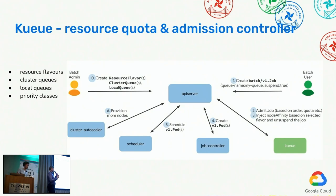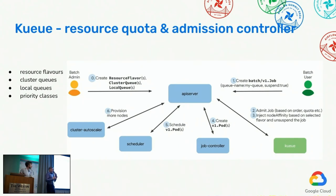Whenever you want to submit a job with specific hardware constraints or requirements, you submit it to Kueue. Kueue is responsible for checking if there are enough resources to execute your Kubernetes job. If there are enough resources, it will admit or allow the job execution, update the information about current resource usage, and ensure you are not exceeding the quota assigned to your cluster. On the other hand, if this is a high-priority workload and there are not enough resources, Kueue will interrupt some other workload with lower priority just to make space. That, in a nutshell, is what Kueue is about and what it does.